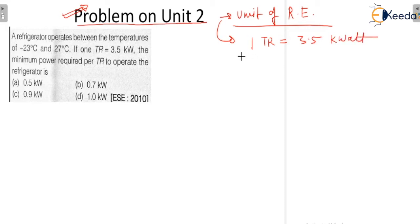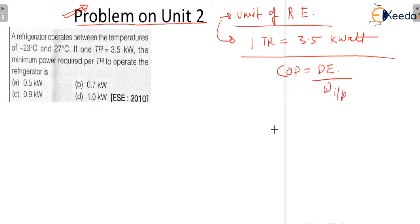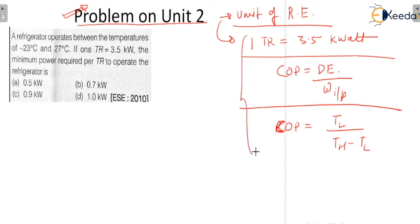The basic formula behind that is: COP is equal to desired effect upon work input. And for a reversible cycle, COP is just equal to TL divided by (TH minus TL). So these three are the basic formulas, and by using them we can solve any problem.